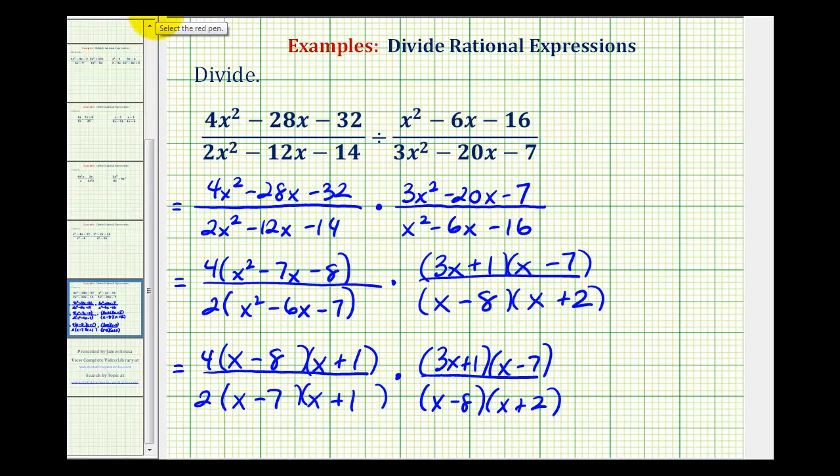So every time we have a common factor between the numerator and denominator, it's going to simplify to 1. So for example, here we have x minus 8 over x minus 8. Here we have x plus 1 over x plus 1. These are all simplifying to 1's. And we also have an x minus 7 over x minus 7. And there's one last thing we can do. Notice 4 and 2 share a common factor of 2.